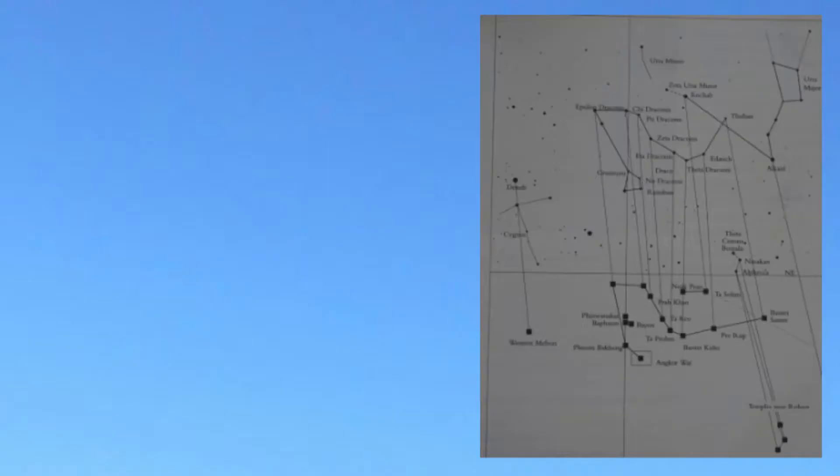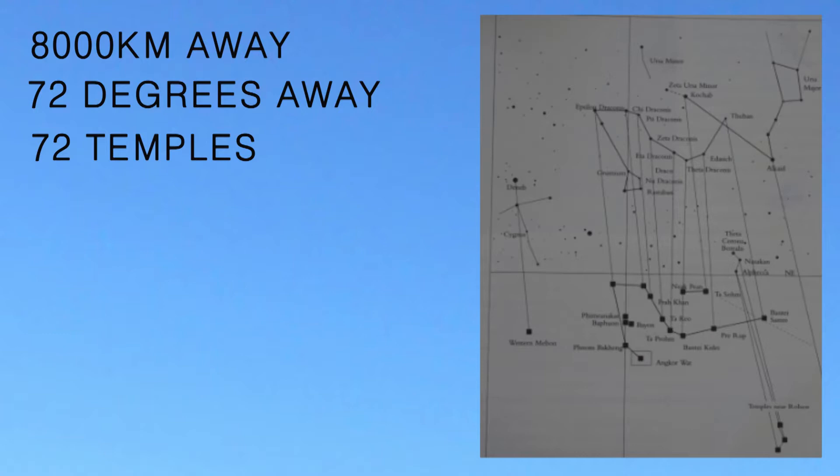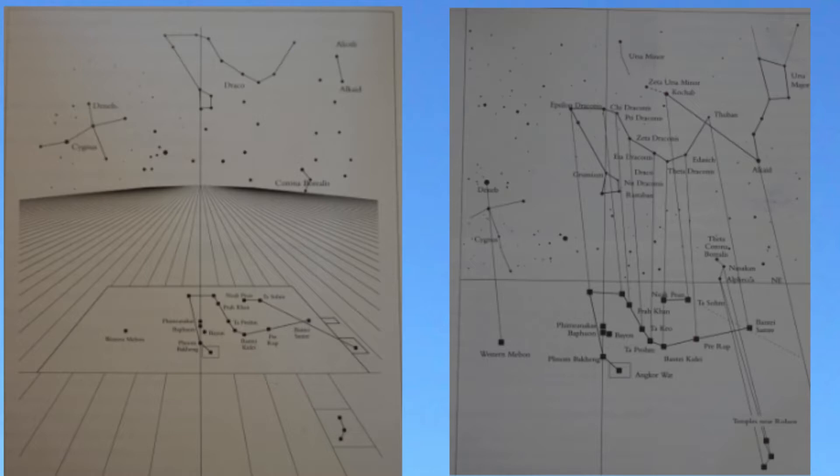8,000 kilometers away or 72 degrees away, the 72 temples of Angkor Wat point to the exact same time. If you look at this image of the temples, you can see that they exactly mirror the stars of Draco and other nearby constellations at the sunrise on the spring equinox 10,500 BC.